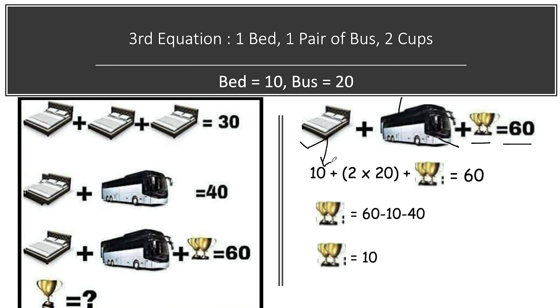We know the value of one bed, that is equal to 10. We know the value of one bus, that is equal to 20. We have two buses, so 20 plus 20 or 2 times 20 equals 40. And we have two cups present here, total value is equal to 60. Now moving all these values to the right side, so it will become 60 minus 40 minus 10.